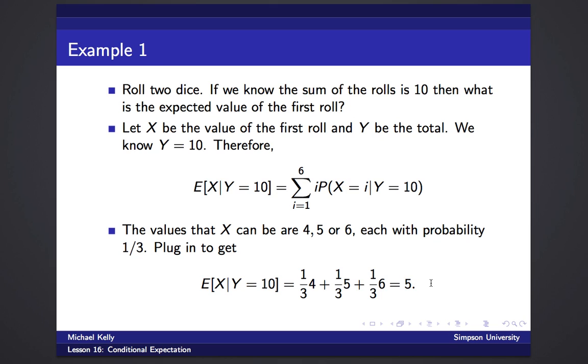So given that the sum of the two rolls is 10, x has an expected value of 5.